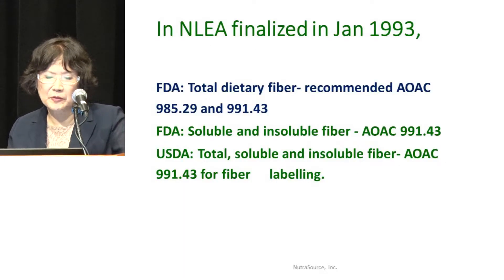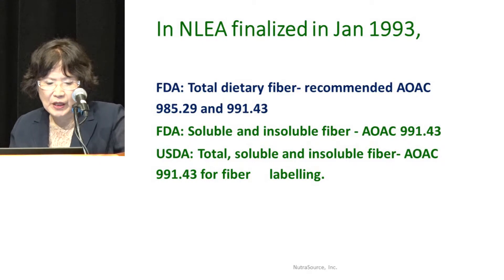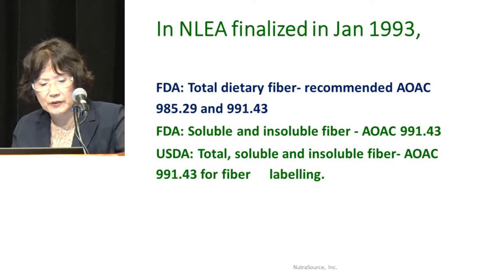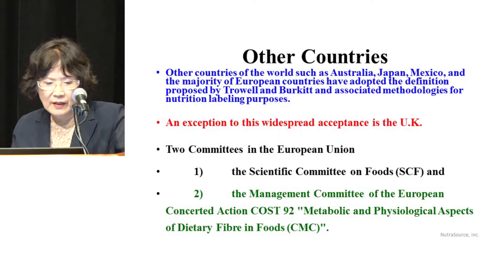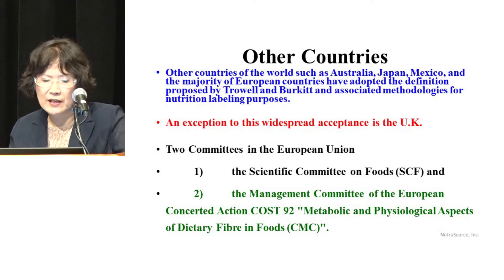In NLEA, finalized in January 1993, FDA recommended AOAC 985.29 and 991.43 for total dietary fiber methods. For soluble-insoluble labeling, FDA recommended 991.43 for total soluble and insoluble fiber labeling. In other countries like Australia, Japan, Mexico, and the majority of European countries, the dietary fiber definition proposed by Trowell and Burkitt was adopted. The only exception was the UK.